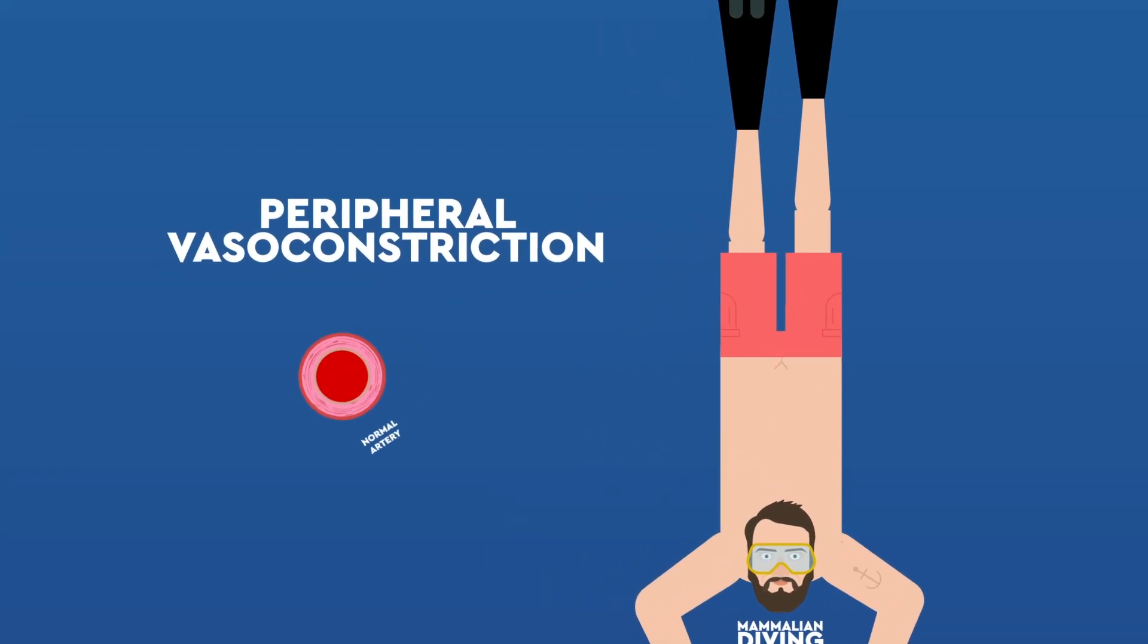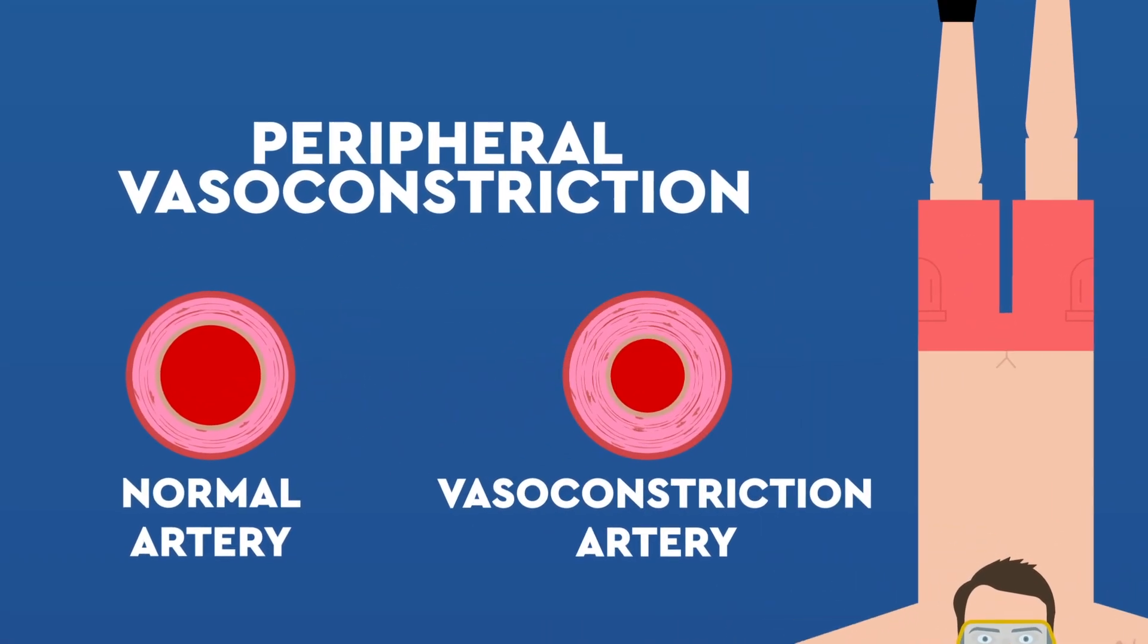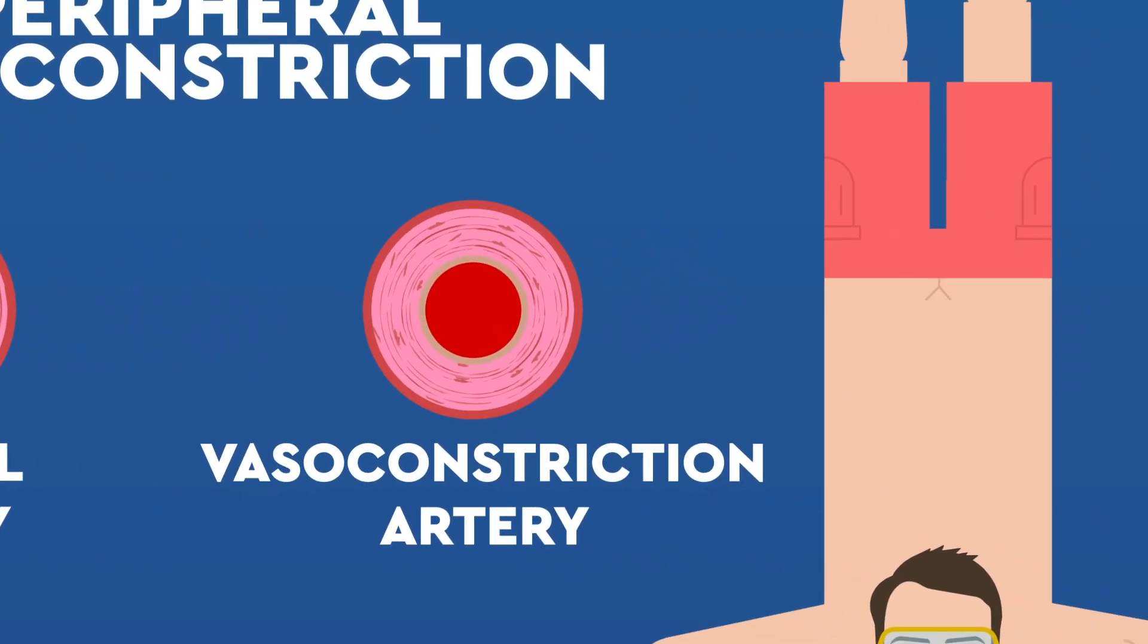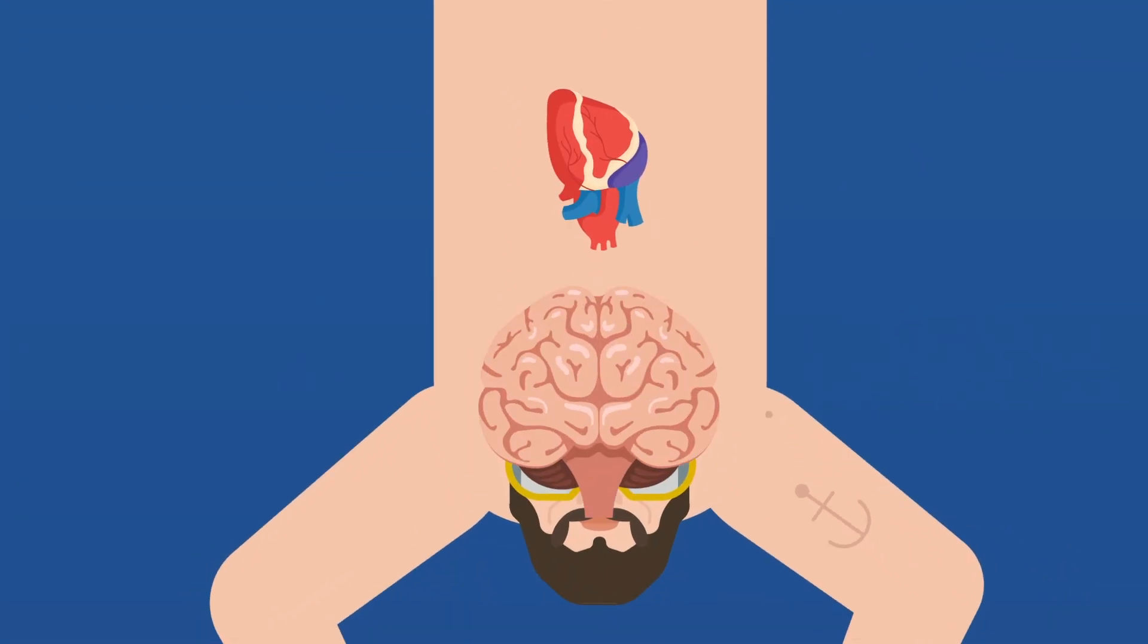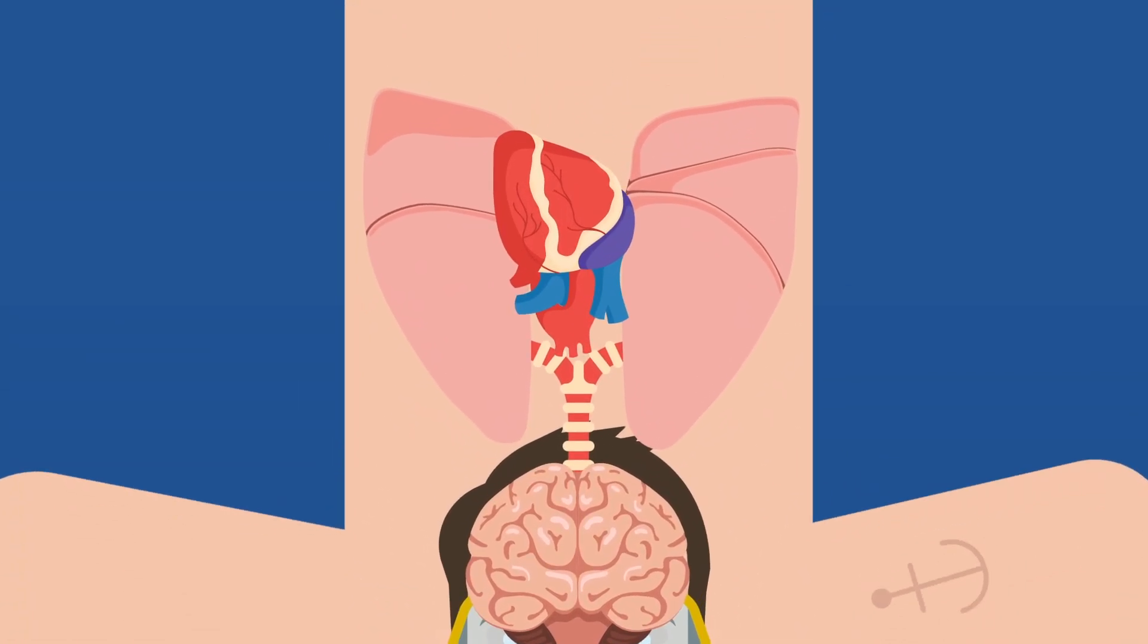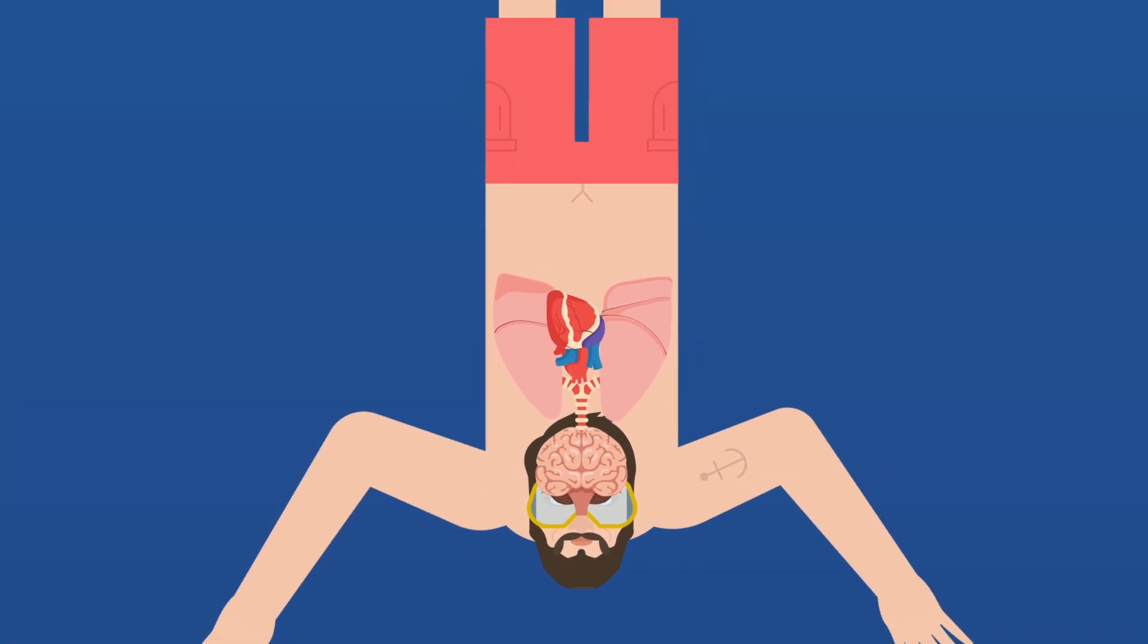The mammalian diving reflex also lowers your blood pressure, which allows for peripheral vasoconstriction, the constriction of blood vessels in your limbs. This moves oxygenated blood towards the important organs like the heart, the brain, and in particular, blood shifts to the lungs to expand the vessels and balance out the pressure from the water.